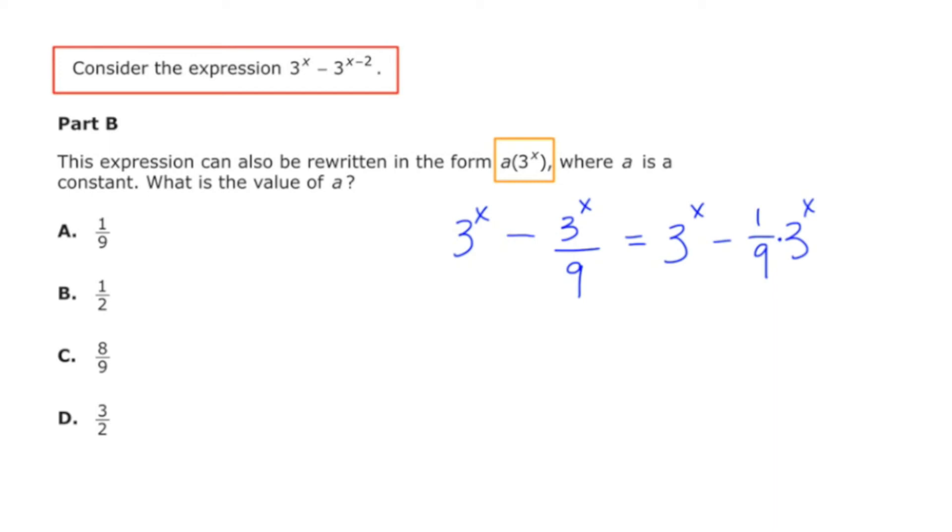And now I'm going to factor out the greatest common factor of each of these two terms. And the greatest common factor would be 3 to the x. Now remember, to take out means to divide. So if I have 3 to the x, and I divide by 3 to the x, I'm left with 1. And there's a minus sign here. And then if I've got 1 9th times 3 to the x, and I take out or I divide by 3 to the x, I'm left with 1 9th.